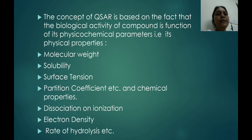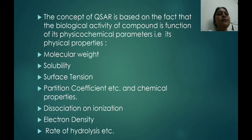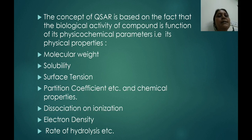The chemical properties include dissociation, ionization, electron density, and rate of hydrolysis. Molecular weight, solubility, surface tension, partition coefficient, dissociation constant, and electron density are all quantifiable — we can take numerical values for each. These are the physico-chemical parameters that QSAR works with.